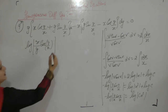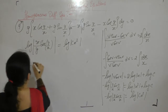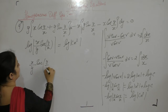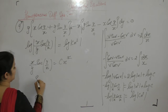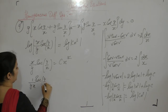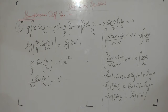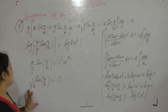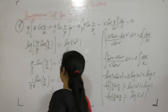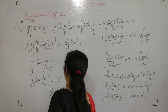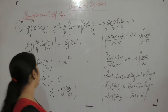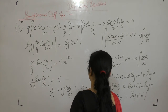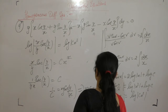Log cancels on both sides, giving x upon y times sec(y/x) equals cx squared. One x cancels, giving 1 upon yx times sec(y/x) equals c. Rearranging: 1 upon c times cos(y/x) times xy equals 1, which we write as xy cos(y/x) equals k, where k is a new constant greater than zero.